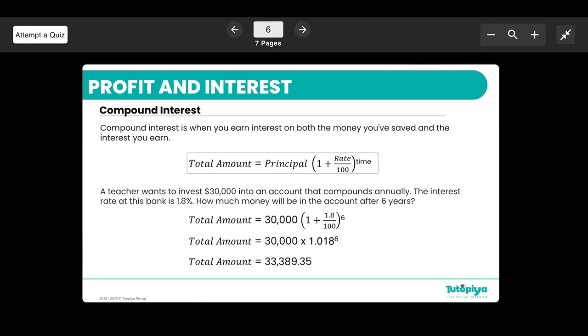So we simply substitute in the rate as 1.8, time as six years, and principal as $30,000. You might need to break it down for your calculator here. So first doing this, then adding it to one to get the value of 1.018, and then doing the power value, and then multiplying it into $30,000, which then results in this final amount.